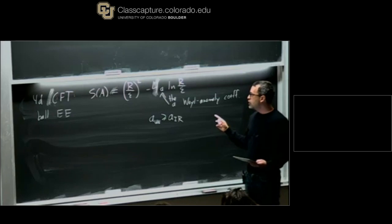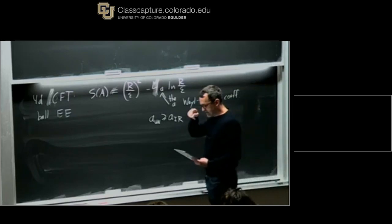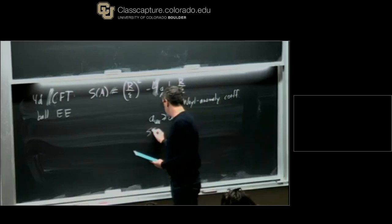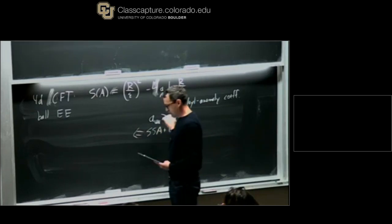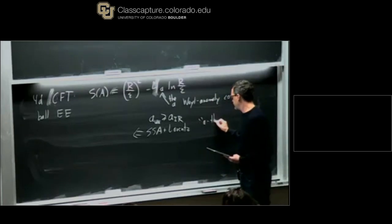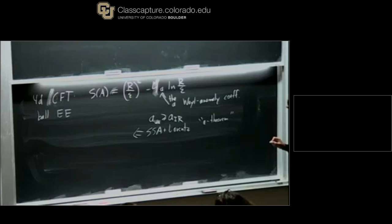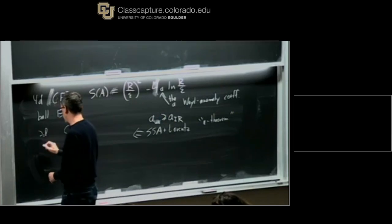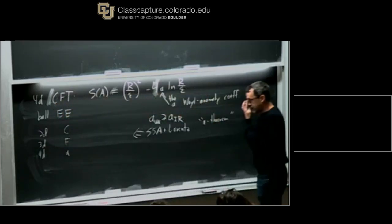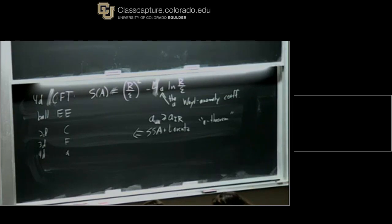Just a few days ago, this was proven using ball entanglement entropy and strong subadditivity by Cassini, Teste, and Toroba. This is the A-theorem. So now we have entanglement entropy-based proofs of all of these. The terminology: in 2D it's called C, in 3D it's called F, and in 4D it's called A. We don't have any theorems above 4D — we have conjectures which are not on super firm footing for higher dimensions.